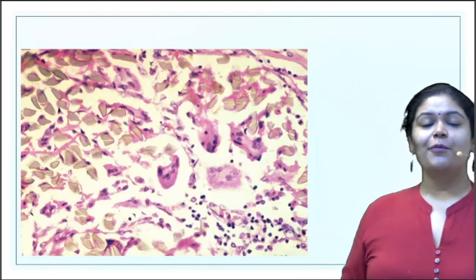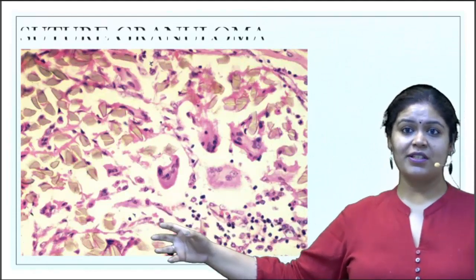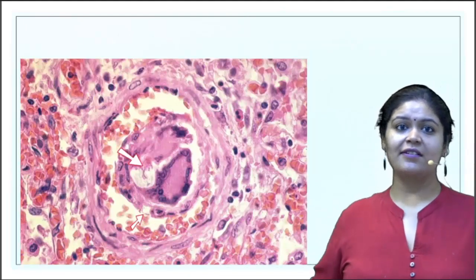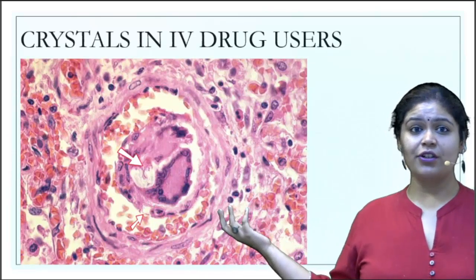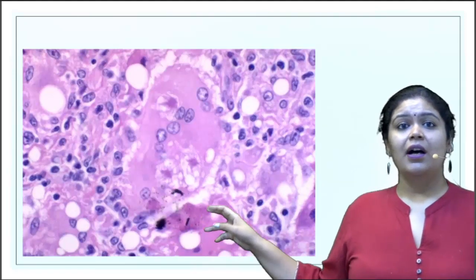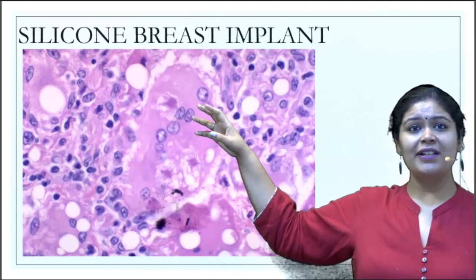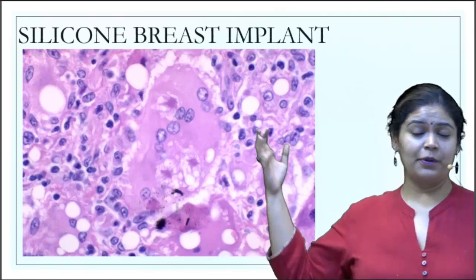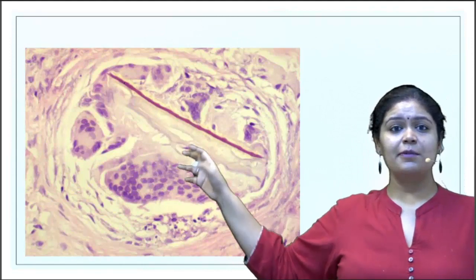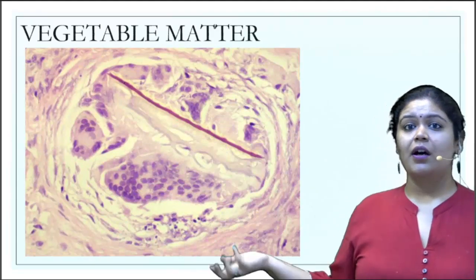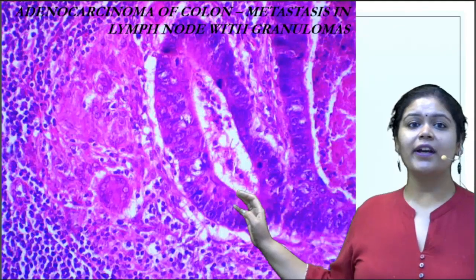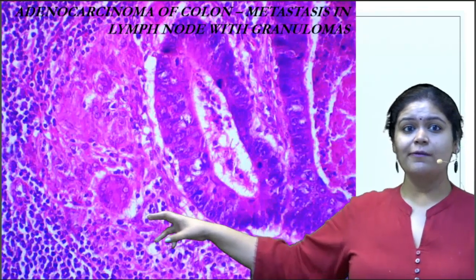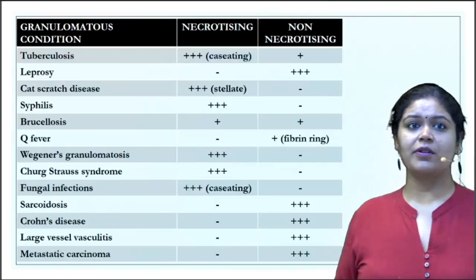Here is a suture granuloma with visible giant cells, and a crystal-containing granuloma seen in IV drug users within a vessel, with asteroid bodies. One was from a silicone breast implant, and another from aspirated vegetable matter causing granulomatous response — like aspiration pneumonia. Finally, this is a very brisk granuloma formation in a colonic adenocarcinoma that has metastasized to a lymph node, with the lymph node showing a granulomatous response.